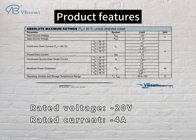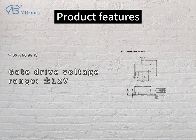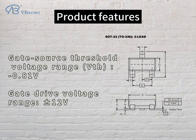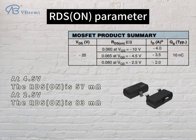Product features: rated voltage of -20V, rated current -4A. Gate-source threshold voltage range VTH: -0.81V; gate drive voltage range: 12V. RDS-ON parameter: at 4.5V, the RDS-ON is 57mΩ; at 2.5V, the RDS-ON is 83mΩ.